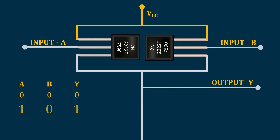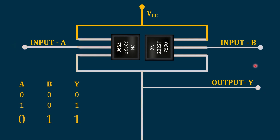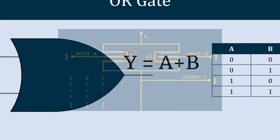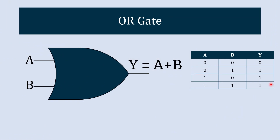When B is 0 and A is 1, transistor one turns ON, and we get VCC in output — giving us 1. When A is 0 and B is 1, the other transistor turns ON and the output becomes 1. And when both inputs are 1, we still get 1 in output. So the boolean expression for the OR gate is Y = A + B.